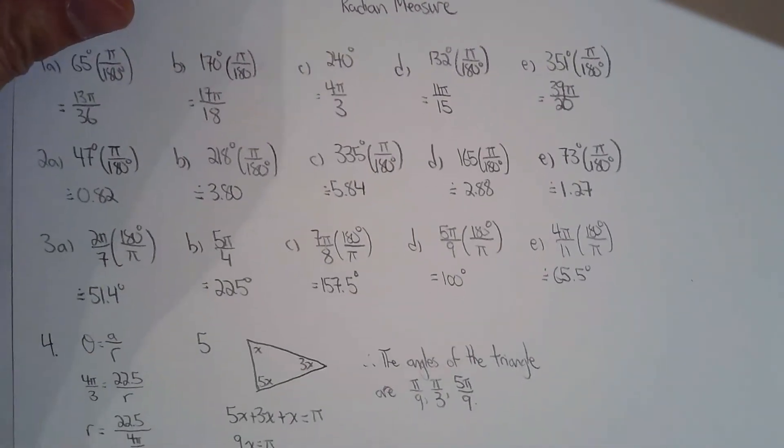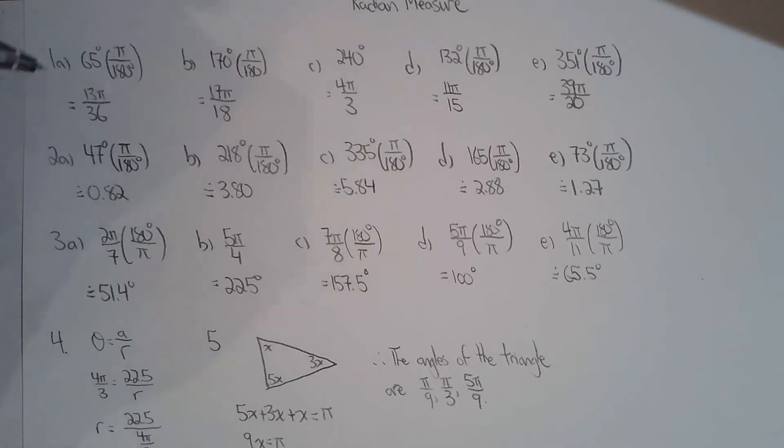For question 2, it's essentially the exact same question as 1, except now they don't want exact answers—they want to round it off to two decimal places. But yeah, 1 and 2 are exactly the same.